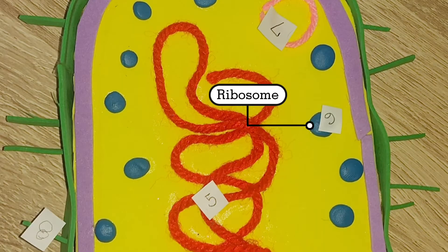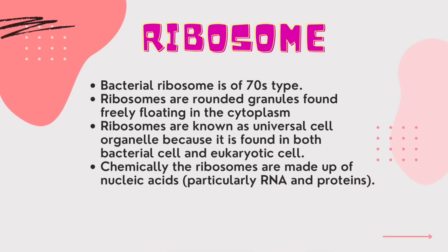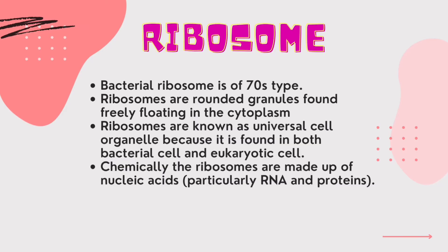Ribosomes help in protein synthesis. The bacterial ribosome is of the 70S type. Ribosomes are rounded granules found freely floating in the cytoplasm. It is known as a universal cell organelle because it is found in both bacterial cells and eukaryotic cells. Chemically, ribosomes are made up of nucleic acid.